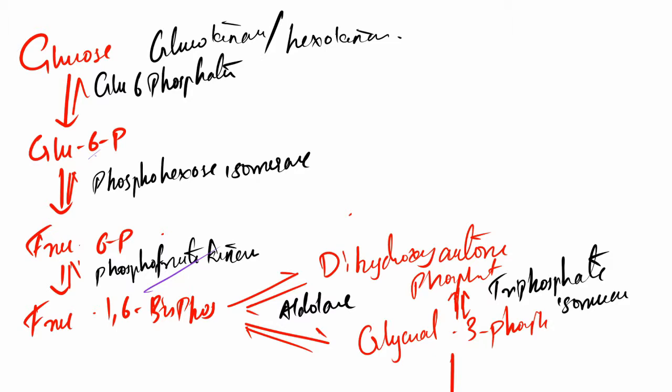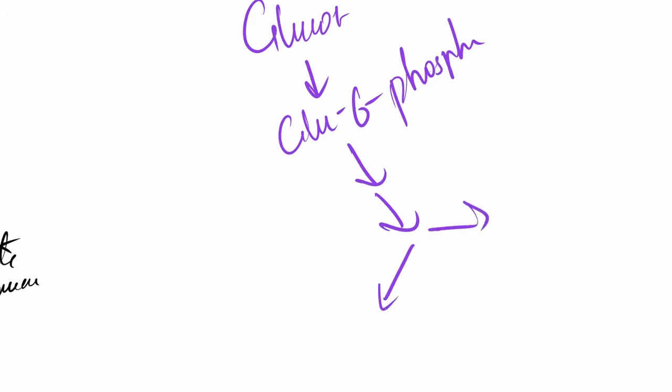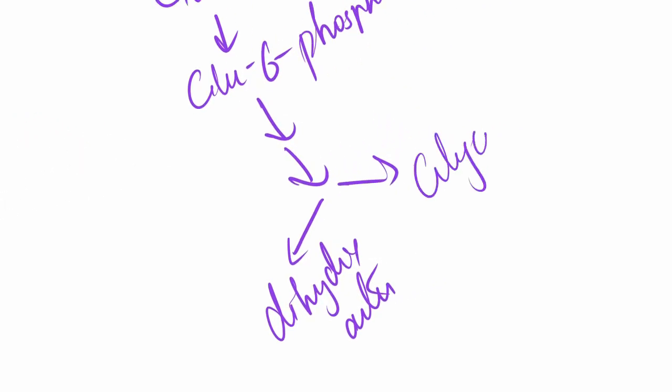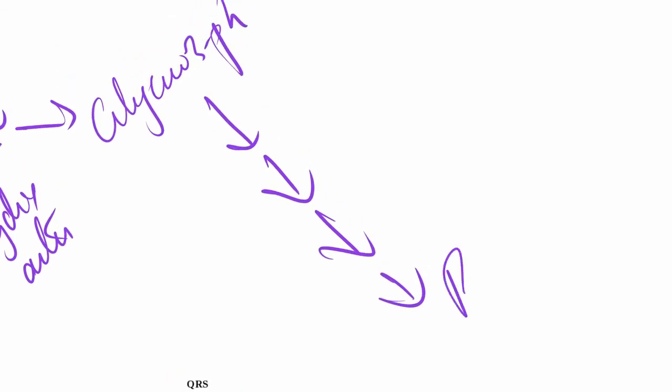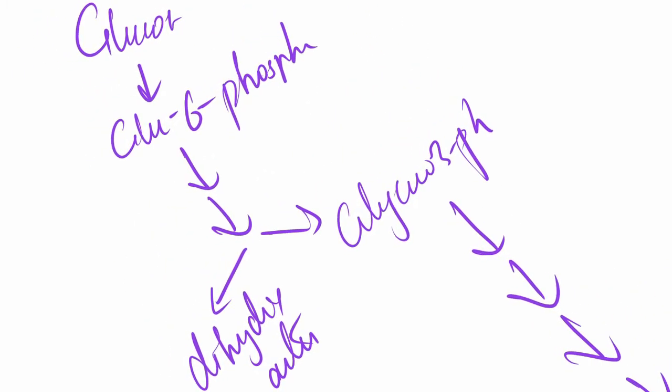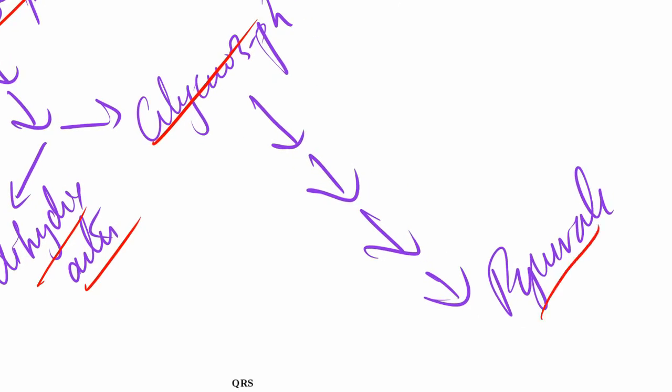Instead of writing all this, you can do something such as this. You can just write glucose, then the steps which you remember. Like I remember glucose gets converted to glucose-6-phosphate, then after some steps it gets converted to dihydroxyacetone and glycerol-3-phosphate. Then I don't remember the rest of the steps, so I draw some simple arrows and I come to pyruvate. Instead of writing the whole glycolysis pathway, if you just write the things which you actually remember and add up the arrows in between to denote that it flows in this way, it works.